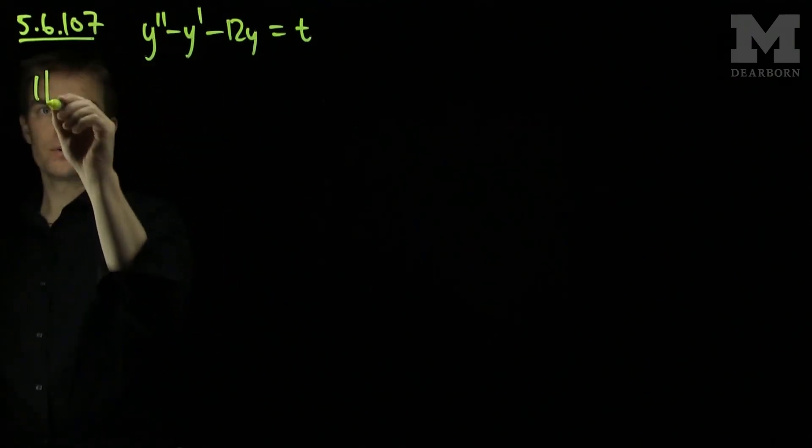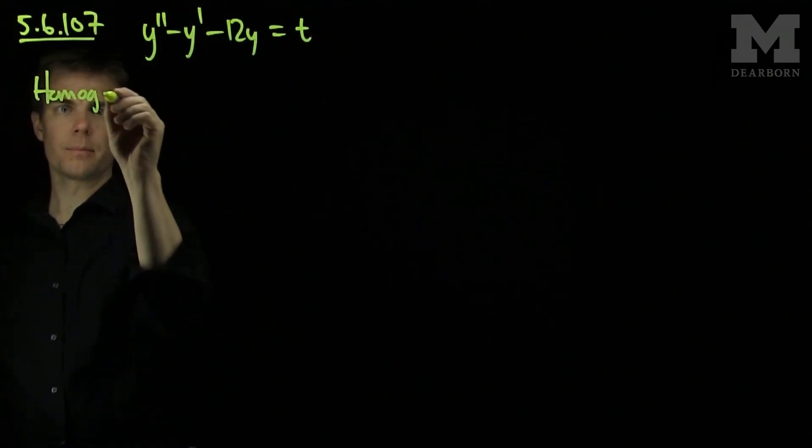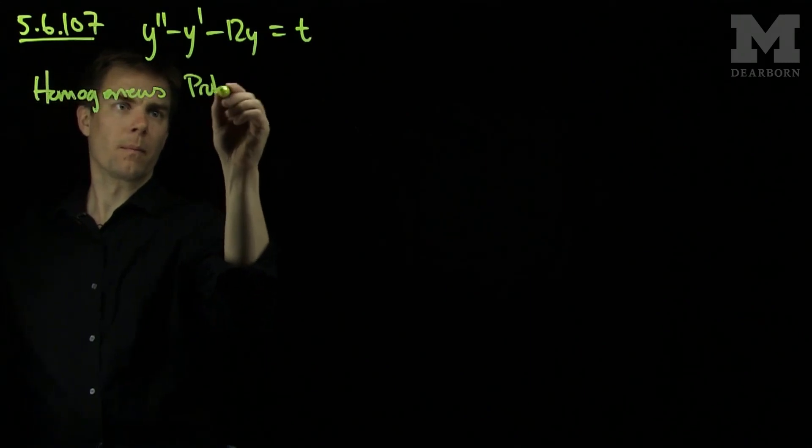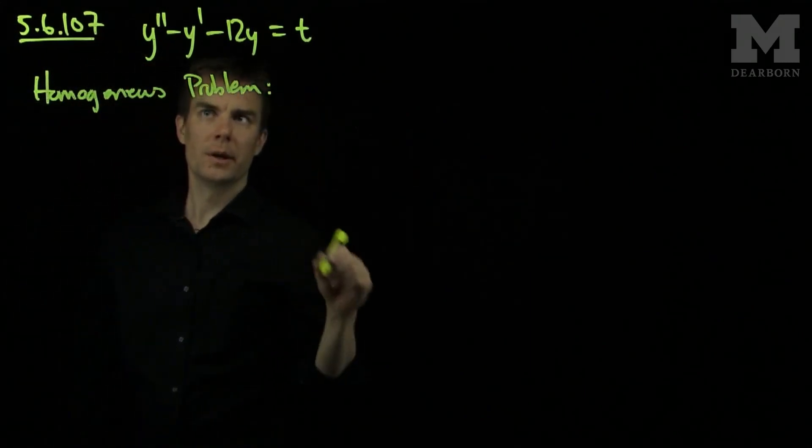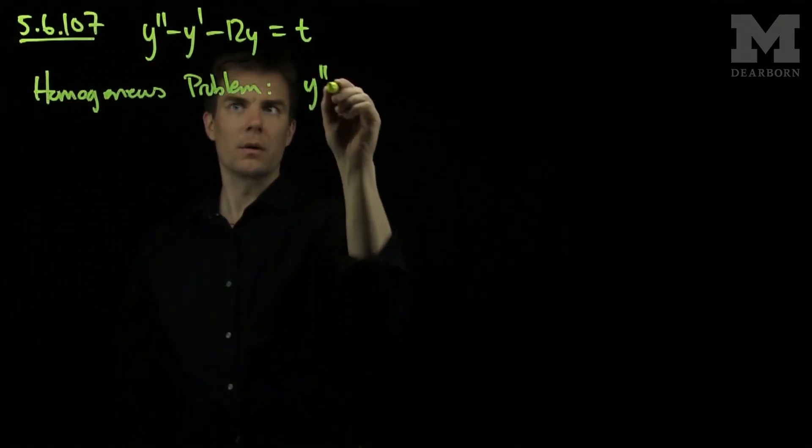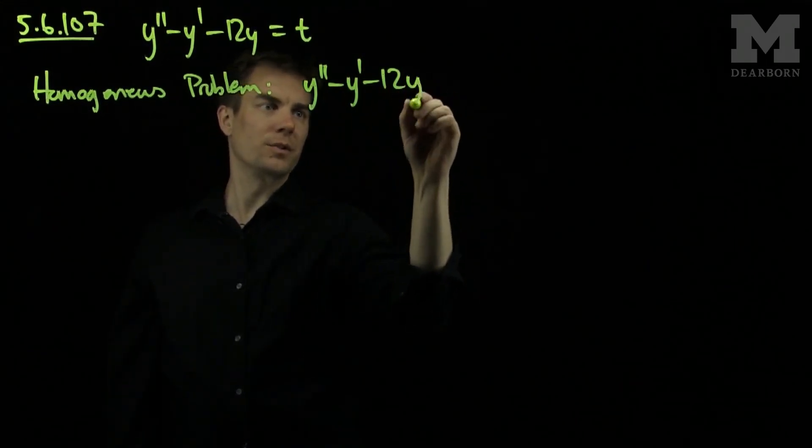We'll solve it as we typically do by writing our homogeneous problem. The homogeneous problem is what you get when you set the right hand side equal to zero.